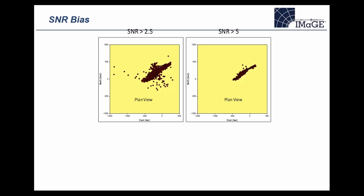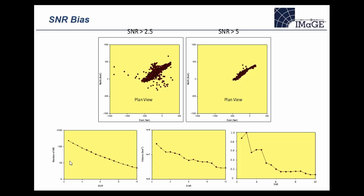The final example looks at the impact of signal-to-noise ratio. The same image is plotted using different signal-to-noise ratio cutoffs: on the left a low cutoff of 2.5, increasing to 5 on the right. The microseismic zone becomes more compressed as we increase the cutoff, because we're pulling out only higher quality data with more confidence in the microseismic location. Lack of signal confidence causes increased location uncertainty and spread in locations, making the hydraulic fracture look bigger than it is.